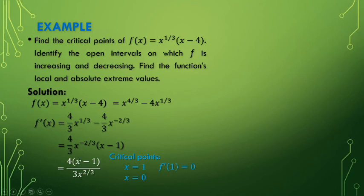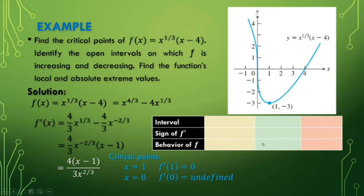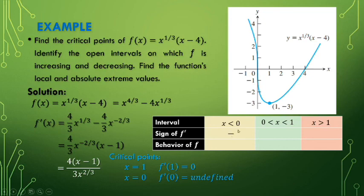So f'(1) = 0 and f'(0) is undefined. This is the graph of y = x^(1/3)(x - 4). The critical points divide the domain into intervals: all x less than 0, x between 0 and 1, and all x greater than 1. On the first interval, f' is negative — decreasing. From 0 to 1, still negative — decreasing. On the right side of 1, the curve is positive — so it's increasing.